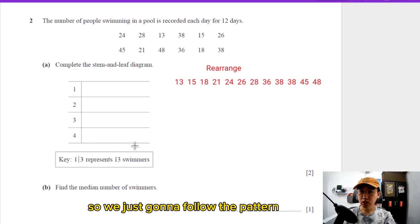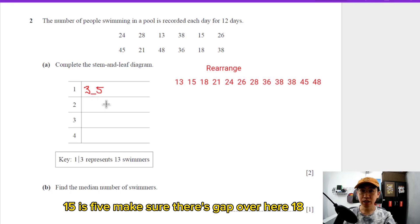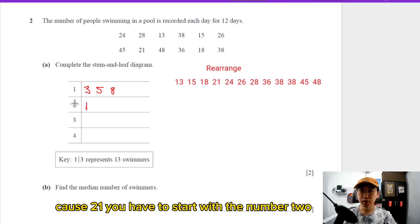We're just going to follow the pattern. 1|3, 1|5 is 5, make sure there's a gap. 18, 21 is going to be here because with 21 you have to start with the number 2, so 2|4, 2|6, 2|8.